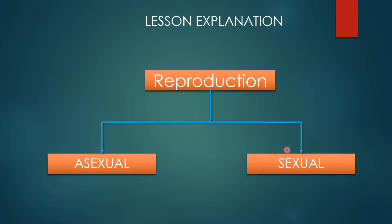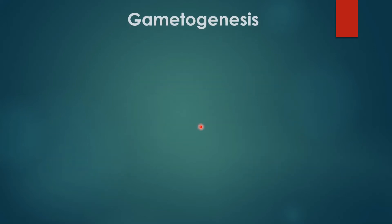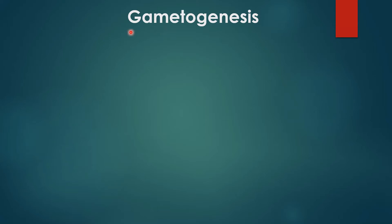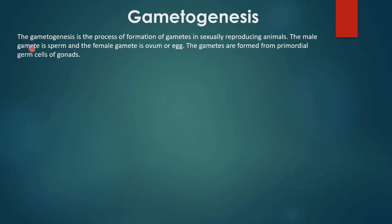We are dealing with sexual reproduction. Today's module we will study about gametogenesis. Genesis means formation — formation of the gametes. Gametes in case of female is egg, whereas in case of male it is sperm. Gametogenesis is the process of formation of gametes in sexually reproducing animals. The gametes are formed from primordial germ cells or gonads.